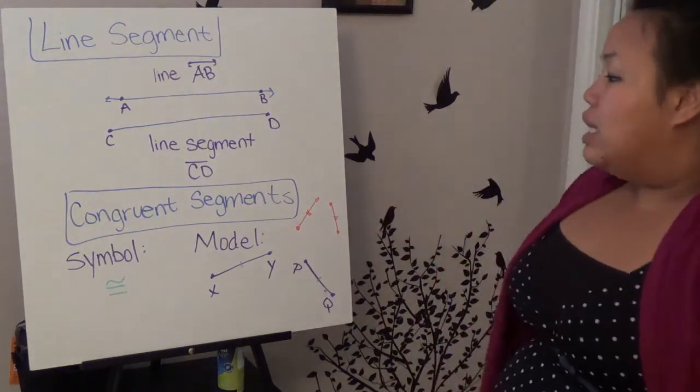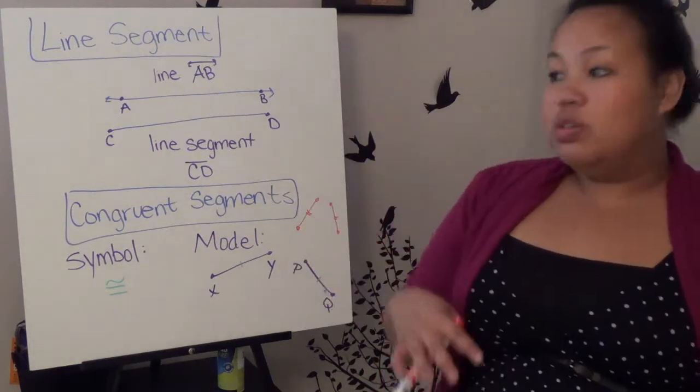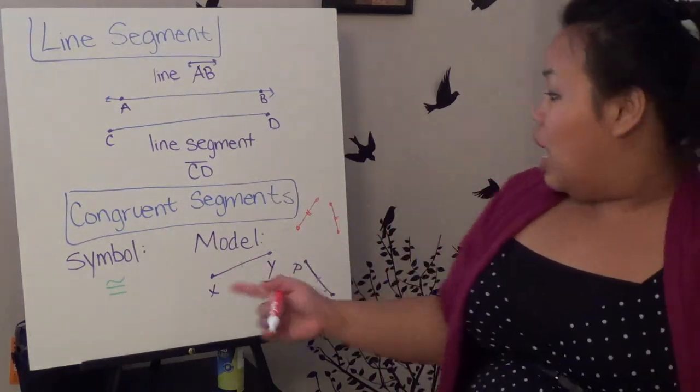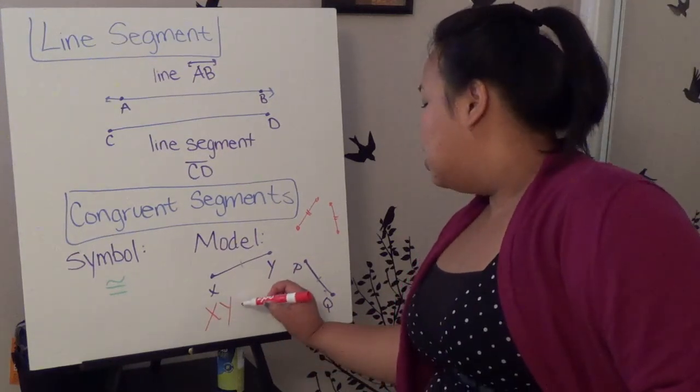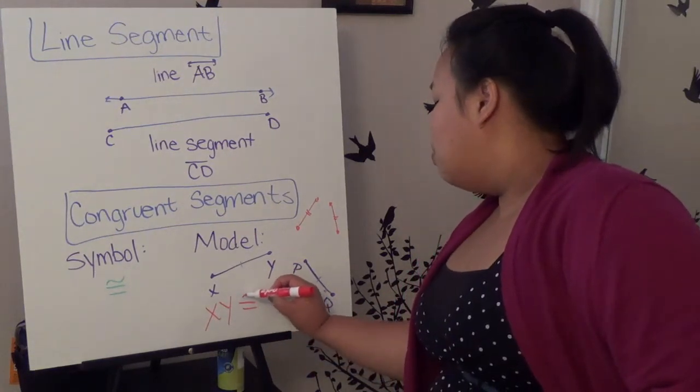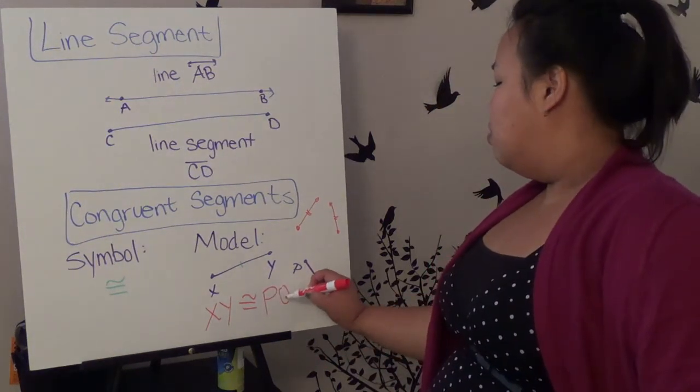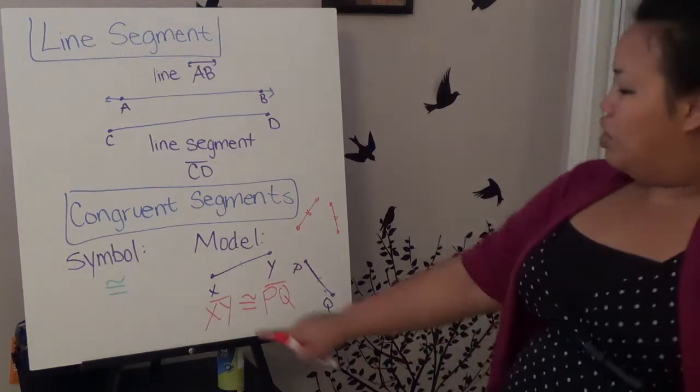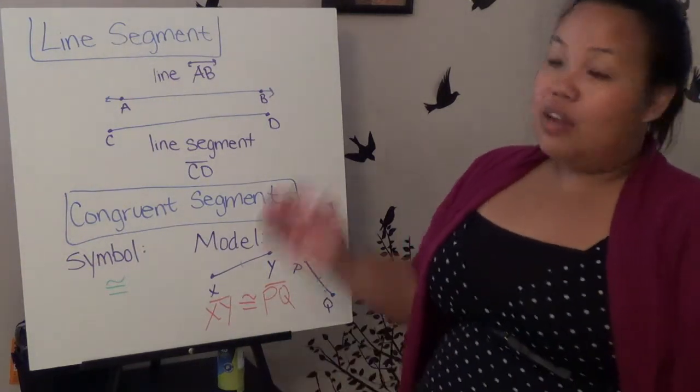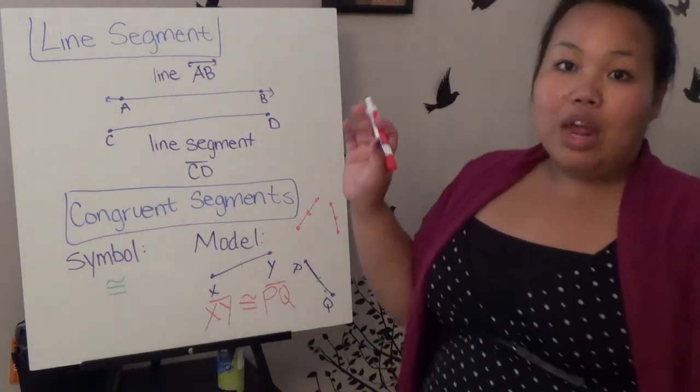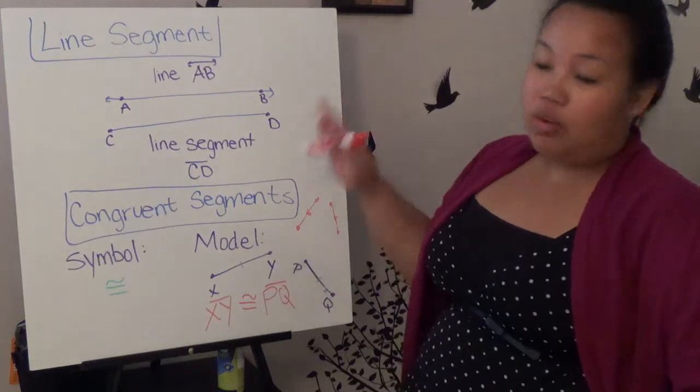The symbol to show that they're congruent is basically an equal sign with a little squiggle on top. That shows that they're equal. And it's written like this. XY is congruent, so I have the equal sign with the squiggle on top to P, Q. The line on top. So that's how you would write the two segments are congruent. Again, if you haven't done so, go ahead and write what's on here. Pause it and write what's on here.